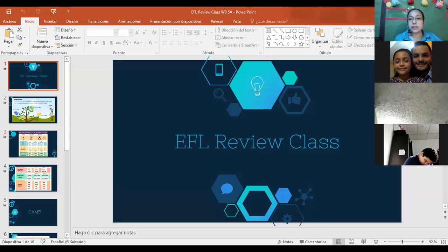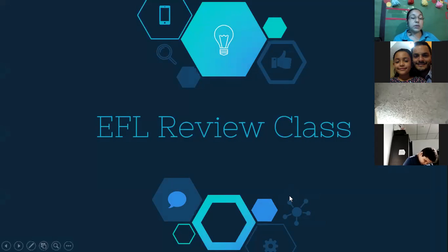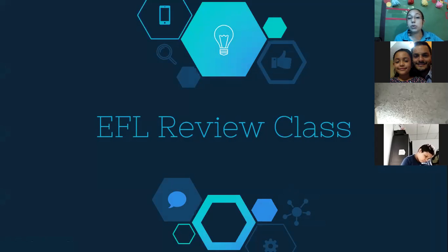This is your EFL review class. These are the topics you study for the test. We have four topics: the first one is superlatives and comparatives, then we have 'have to', then vocabulary of unit number two — for example, Ancient Rome — and also Morocco, which is part of unit number one.